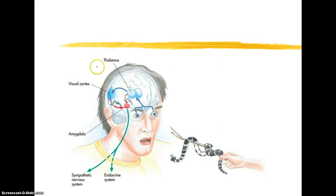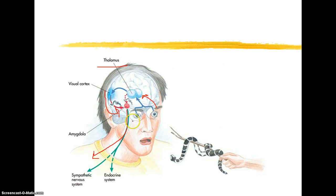To recap: the thalamus in the limbic system receives visual information. Combined with further visual processing, it can completely bypass higher pathways and create an alarm system. And here we have the sympathetic nervous system, which we talked about in terms of the body system — this is where we would release certain hormones needed to defend us from that naughty snake. That's all, folks.